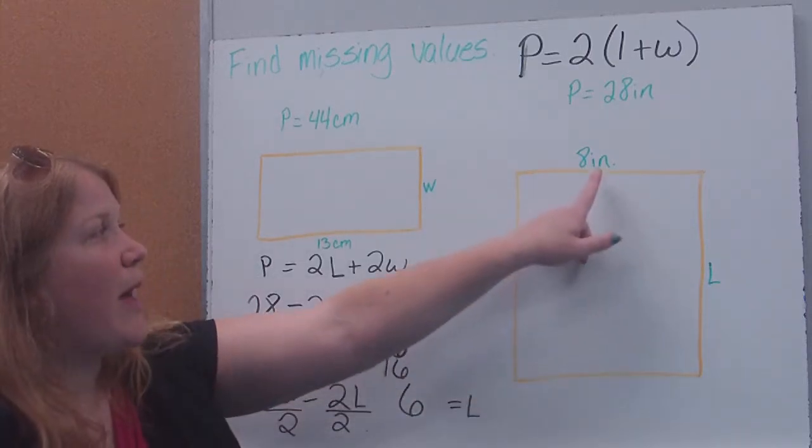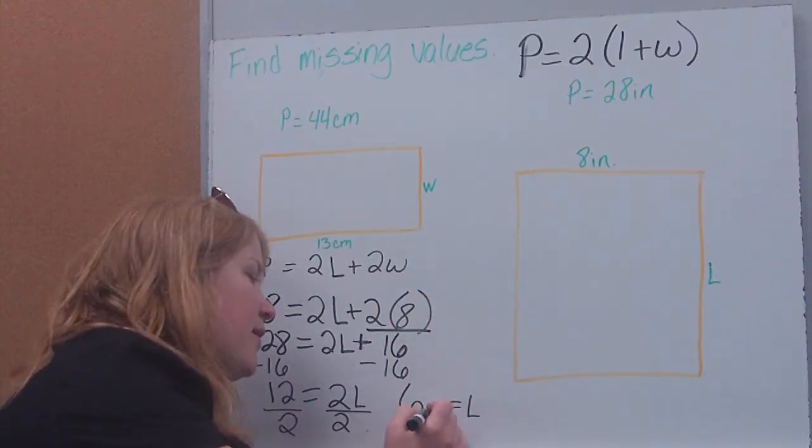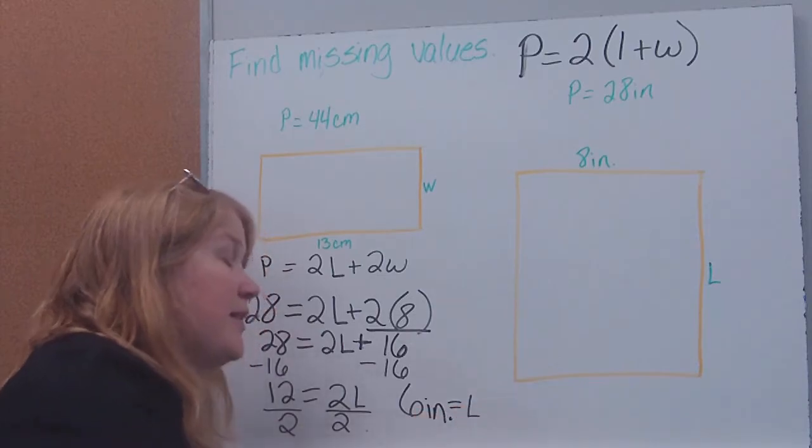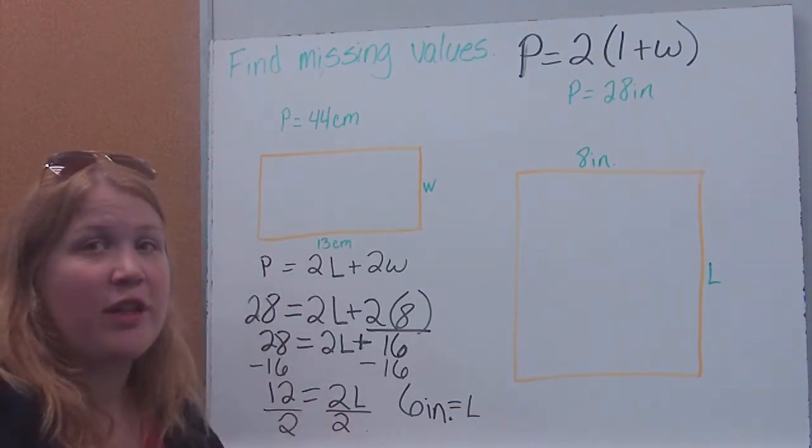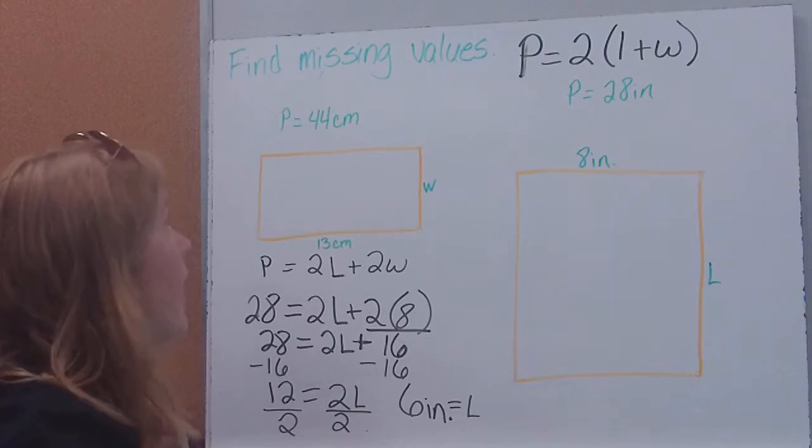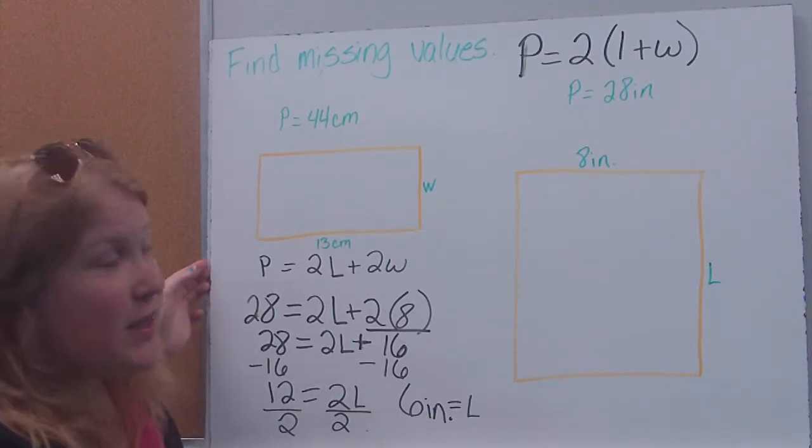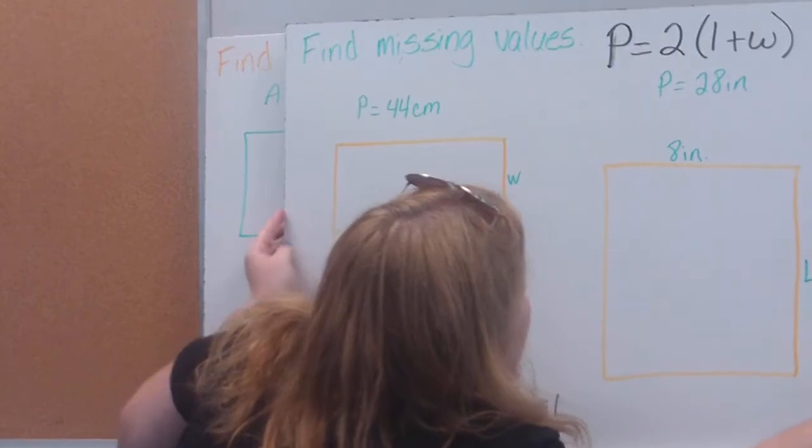Remember, we're not done. Look back. Here, our labels were inches. It's 6 inches. All right? So be sure that you're keeping your labels in there as you go along. So that's a couple with perimeter. Now we're going to take a look at some that are area.